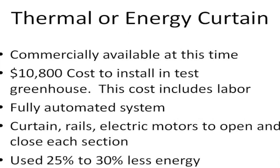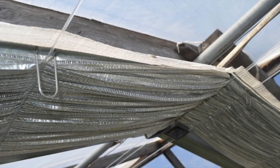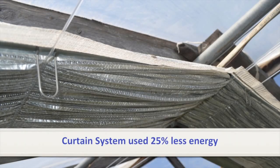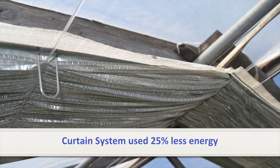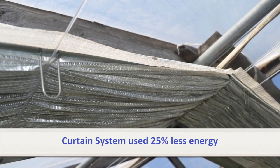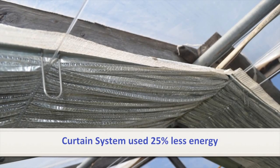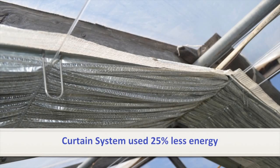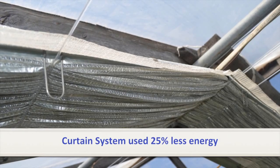Thermal curtains are a woven, aluminized material that can be pulled out or closed at night just above the plants to trap thermal heat and reduce the amount of space that needs to be heated. The curtains can also be closed during hot sunny days to shade and cool the bench area.